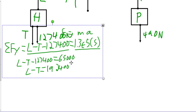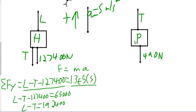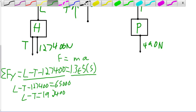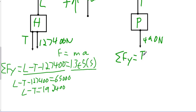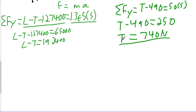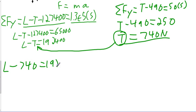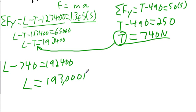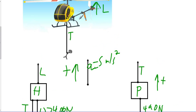Now we work on the person. The sum of all forces in the y equals T minus 490, and the person is also accelerating upward, so that equals 50 times 5. Working out the math: T minus 490 equals 250. Adding 490 to both sides, T equals 740 newtons. The tension in the cable is 740 newtons. Plugging this back into the helicopter equation: lift minus 740 equals 192,400. Adding 740 to both sides, the lift equals 193,000 newtons, with the correct number of significant digits. For this problem, we used two free-body diagrams for two different objects that were connected.